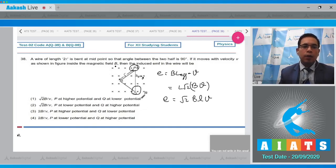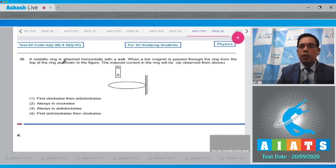Question number 39 states that a metallic ring is attached horizontally with the wall. When a bar magnet is passed through the ring from the top as shown in the figure, the induced current in the ring as observed from above will be: first clockwise then anticlockwise, always clockwise, always anticlockwise, or first anticlockwise then clockwise.